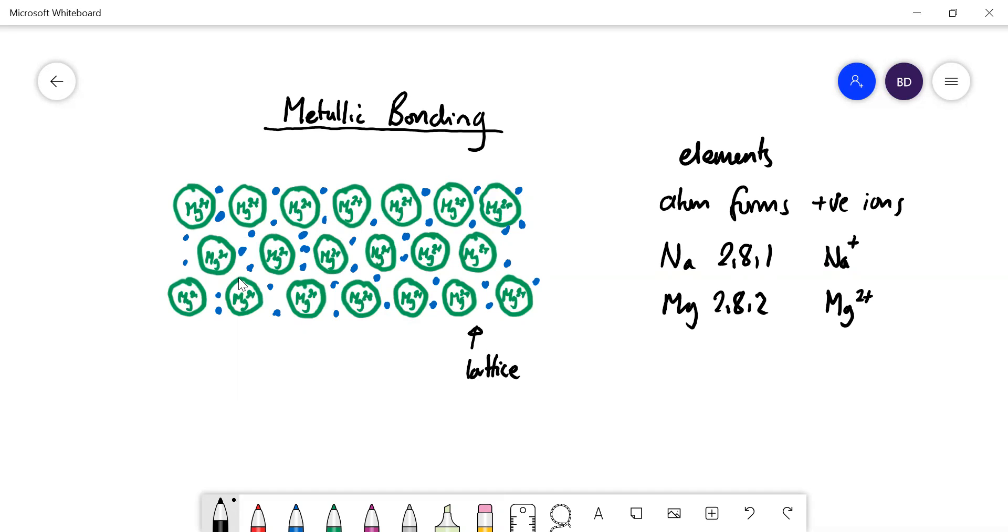Now what's holding that together? Obviously if it was just magnesium ions, they're all positively charged, they would repel each other, so the whole thing would just fly apart. Well, it's because when a metal exists as an element it loses its valence electrons and they become delocalized.